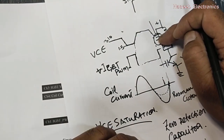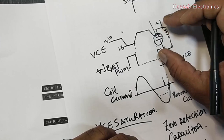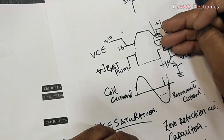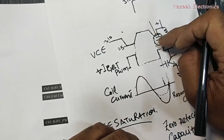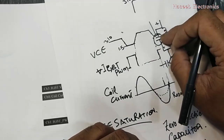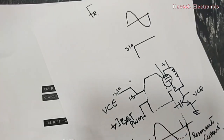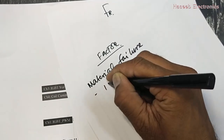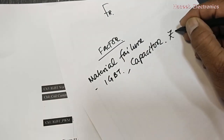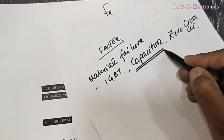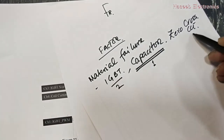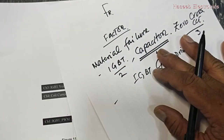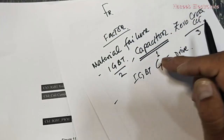To check the capacitor issue, we should check its ESR value — a capacitance meter might show it as good, but an ESR meter will give a perfect reading of its high-frequency behavior. Now, the parameters involved in IGBT damage: the first material failure factors are — number one: the IGBT itself; number two: the resonant capacitor; number three: the zero crossing detector; number four: the IGBT gate components. These are the most probable material failure items.